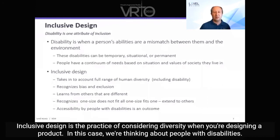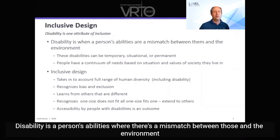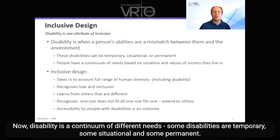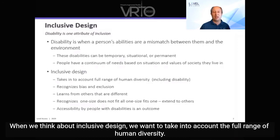Inclusive design is the practice of considering diversity when you're designing a product. In this case, we're thinking about people with disabilities. Disability is a person's abilities where there's a mismatch between those and the environment, and that environment may be caused by values placed on it by society or other factors. Disability is a continuum of different needs — some disabilities are temporary, some situational, and some permanent. When we think about inclusive design, we want to take into account the full range of human diversity.